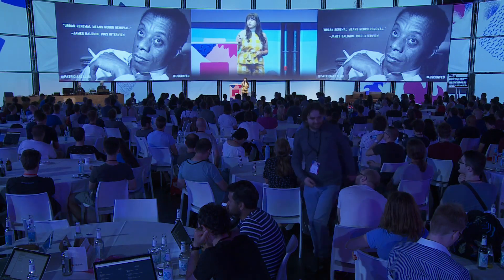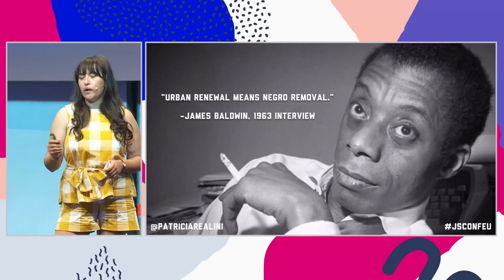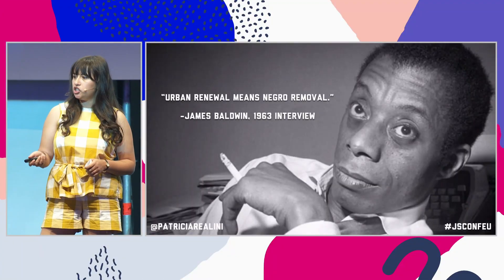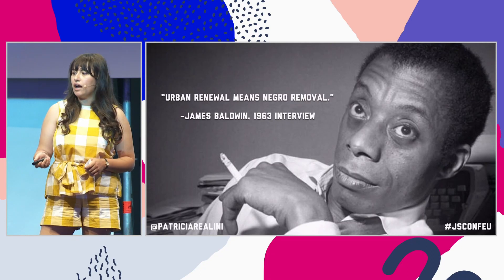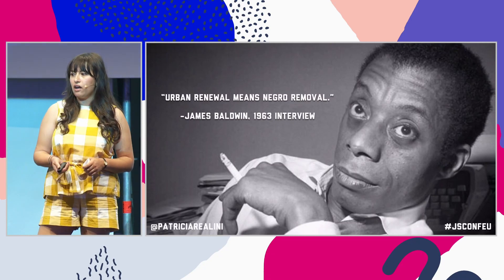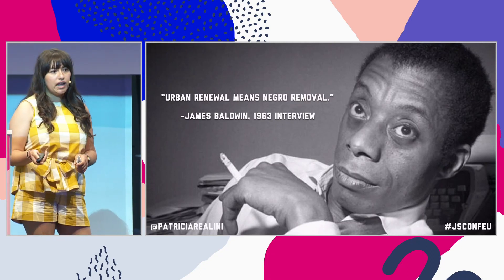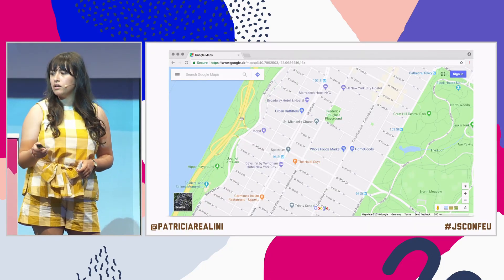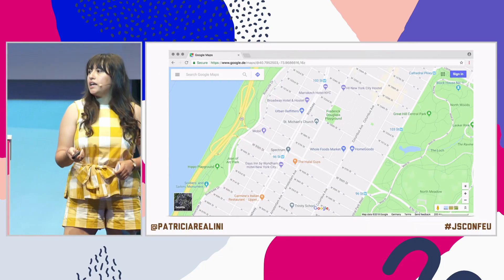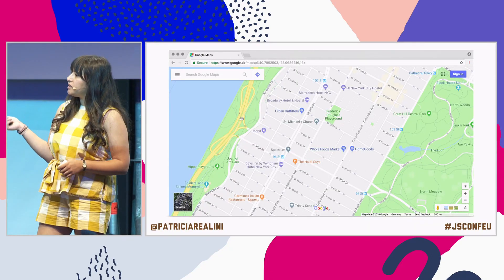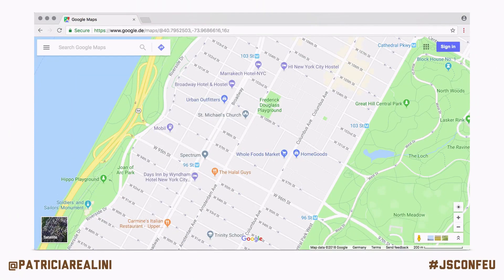Moses did irrevocable socio-economic damage by forcing more than 300,000 families out of their homes in the 1950s and 60s in the name of urban renewal. Here on Google Maps, you can see the two blocks are gone, and in their place are the Park West Village apartments and a Whole Foods market.